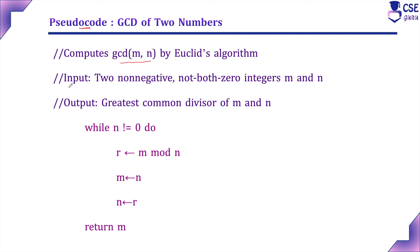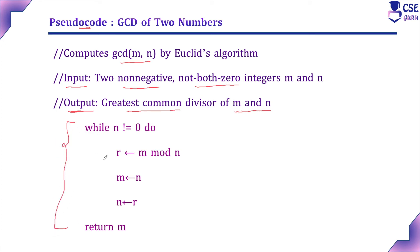The second step specifies the input and its conditions. The condition here is that M and N must be non-negative — negative values are not accepted. Also, both should not be zero simultaneously; any one value can be zero, but not both. The third step specifies the output: the greatest common divisor of M and N. The remaining part contains the complete mathematical logic.